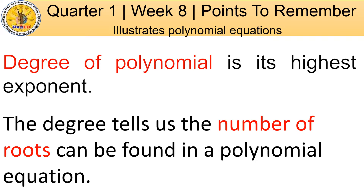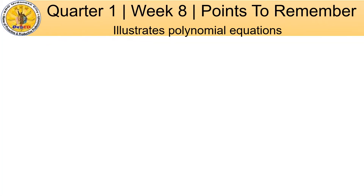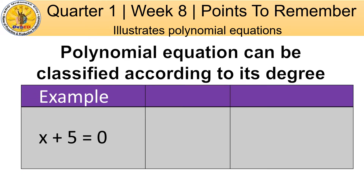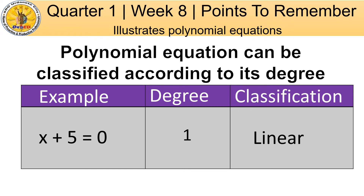Another thing to remember is the classification of polynomial equations. Polynomial equations can be classified according to their degree. For example, x + 5 = 0. The variable x has an exponent of 1, and 5 has an exponent of 0, so 1 is the highest exponent. Therefore, the degree is 1 and the classification is linear — we call x + 5 = 0 a linear equation.